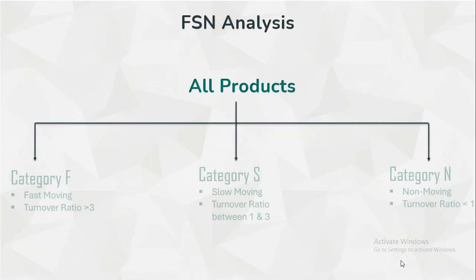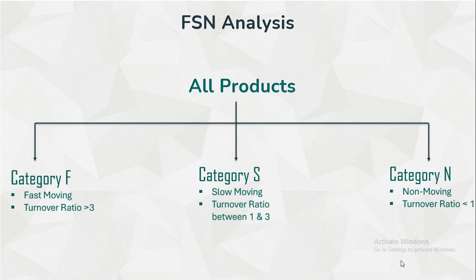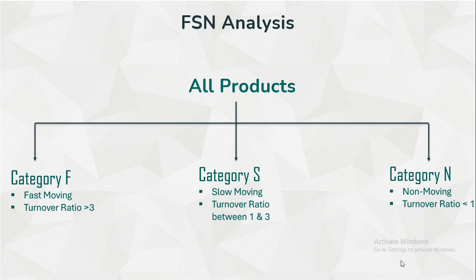FSN analysis in this solution divides all products into three categories. Category F means the product is a fast moving product in your business, whose turnover ratio is greater than 3. Category S means they are slow moving products whose turnover ratio is between 1 and 3. And category N means they are non-moving items whose turnover ratio is less than 1.